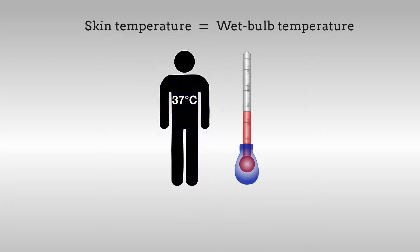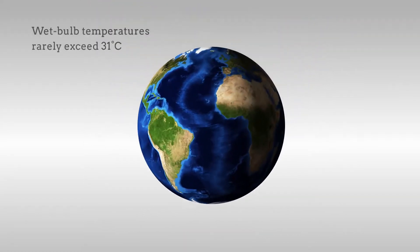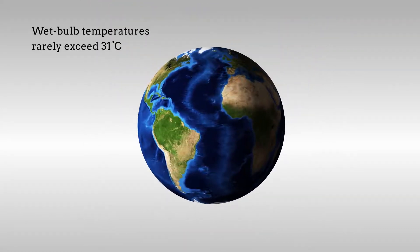Exposure to wet bulb temperatures above 35 degrees Celsius for more than six hours is therefore enough to cause even the fittest human body to overheat and begin to fail. Around the globe, wet bulb temperatures rarely exceed 31 degrees Celsius.